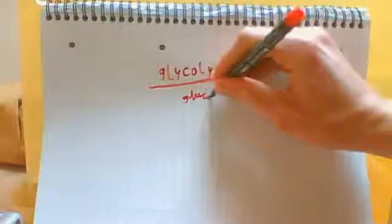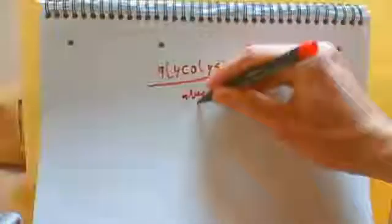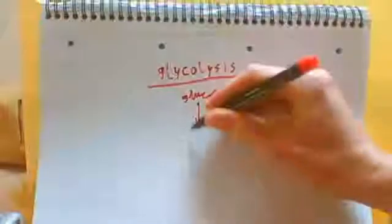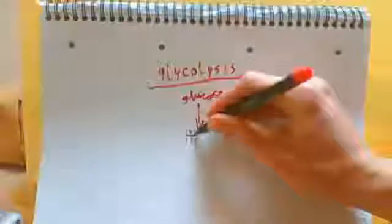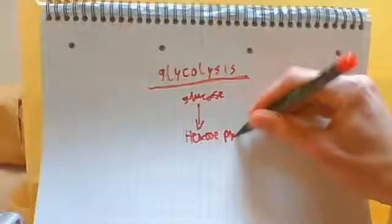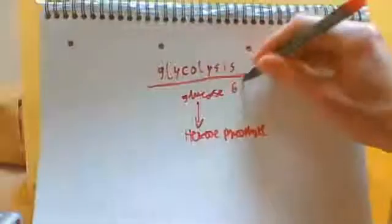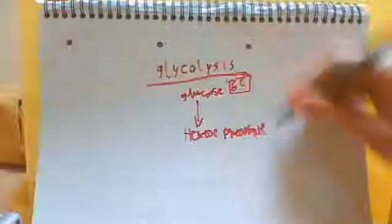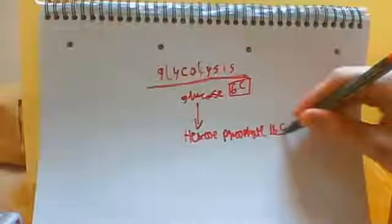So first of all, you have your glucose molecule. Now for each glucose, it ends up forming two pyruvate molecules. First of all, glucose is phosphorylated into something called hexose phosphate. Basically all you need to know is this is a six carbon molecule, and this is also a six carbon molecule.